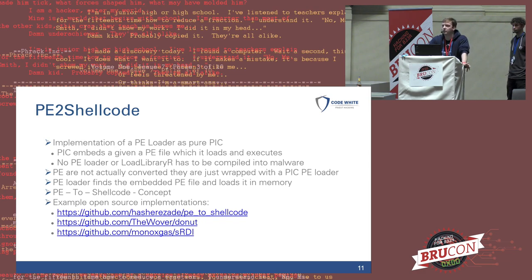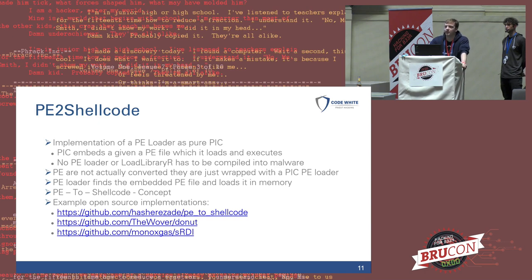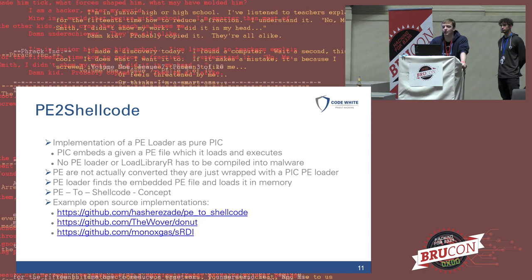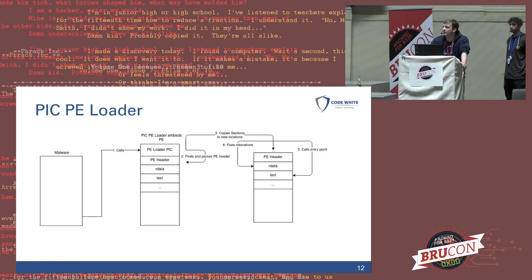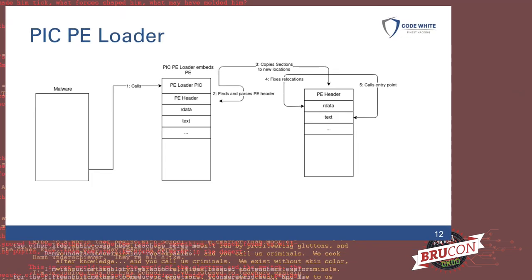You might have heard of PE-to-shellcode tools such as Donut or SRDI, which want you to think they actually convert a PE to shellcode — but what they really do is take a PE file and wrap it with a position-independent PE loader. So it's still a PE loader with a PE file wrapped in actual shellcode, meaning you still need to load the PE file embedded in the shellcode. The malware doesn't need an additional stub — it jumps to the shellcode, the PE loader parses the header, copies sections, fixes relocations, and calls the entry point.